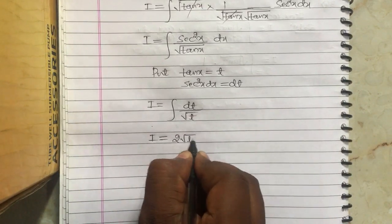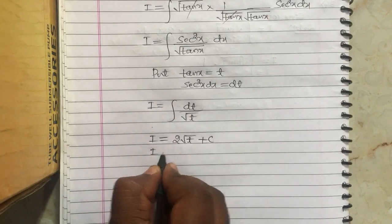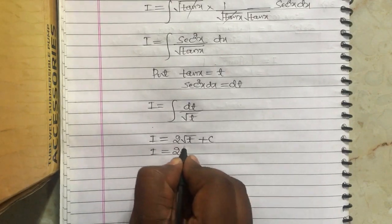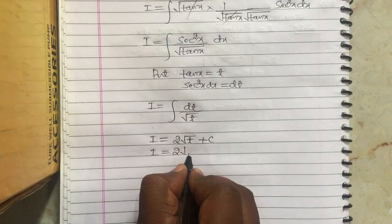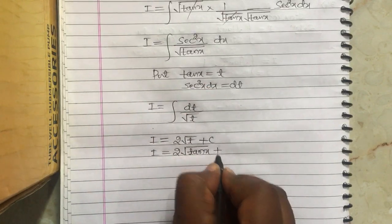It is 2 root t plus c. Substituting back, I equals 2 root tan x plus c.